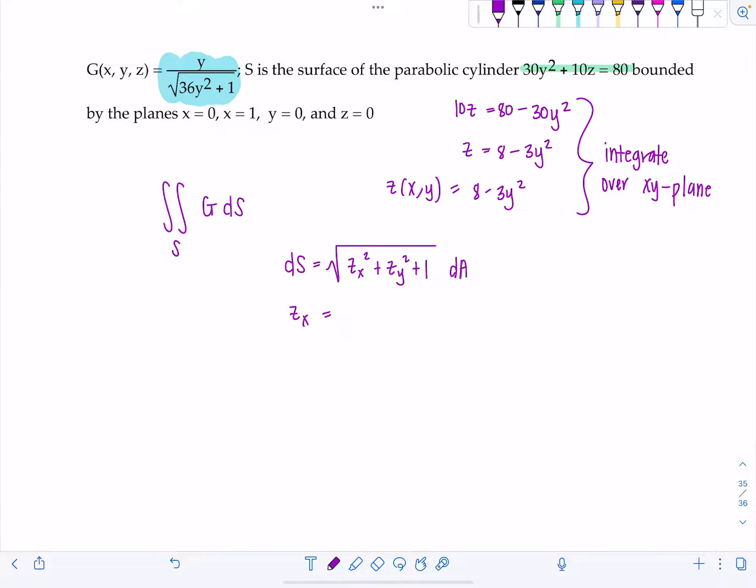So partial with respect to x, this is based off of the surface right here. I don't see any x's, so that guy is 0. And then partial with respect to y is negative 6y. So dS is going to equal square root 0 squared plus 36y squared plus 1 dA. And I'm going to leave it like that. I don't know right now if that's going to be dx dy, dy dx, etc. So put this on the back burner.